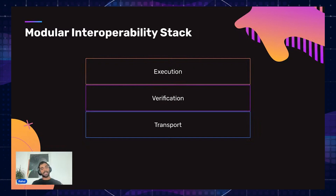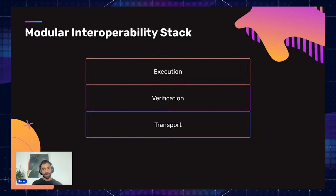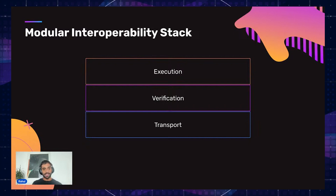So how do we translate this vision back into interoperability and Web3 on the blockchain? We can break the pieces down into very similar-looking pieces: a transport layer, a verification layer, and an execution mechanism built on top. Let's dive in and explore what each of these layers looks like.